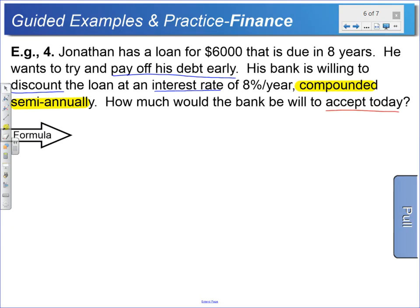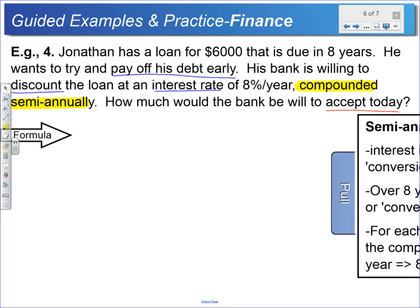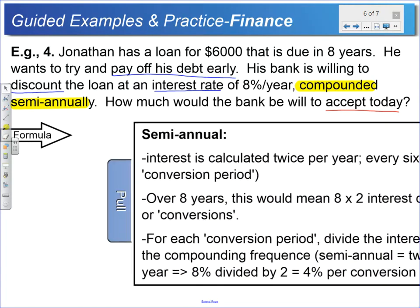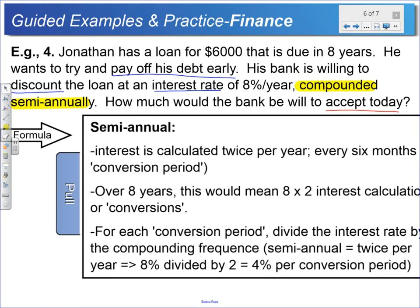We want to figure out what John is going to pay back today—what will the bank take. Prior to setting this up, I need you to know that the term semi-annual in this problem means that interest is calculated twice per year. That means every six month anniversary, at the end of that period called a conversion period, we're paying interest on the loan.